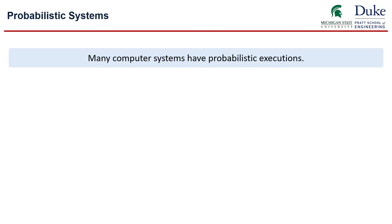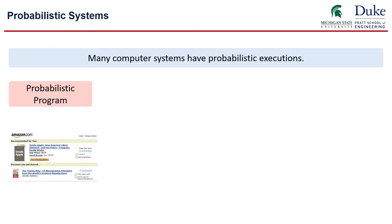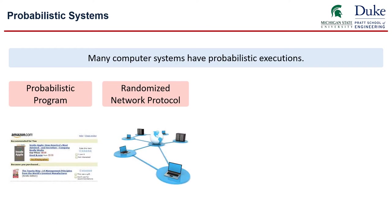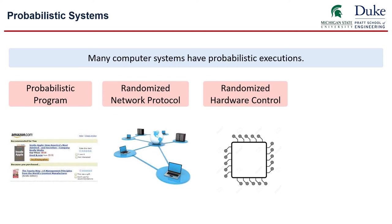In this work, we are interested in probabilistic systems. Arguably, all systems are probabilistic, but here are a few applications where probabilism plays an important role. There are probabilistic programs, randomized network protocols, randomized hardware control strategies for security considerations, and also cyber physical systems that are subject to unknown environmental noise.